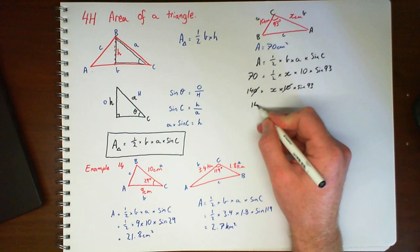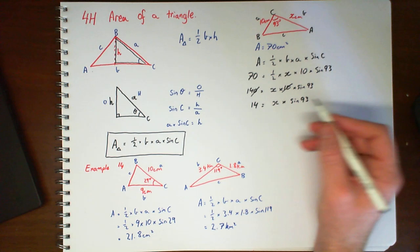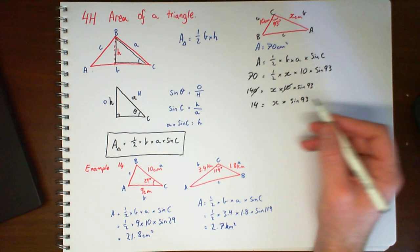Which means we'll get rid of one of those zeros. So we have 14 equals X times sine 93. And then finally divide by sine 93. Put that in your calculator and you'll get 14.02.